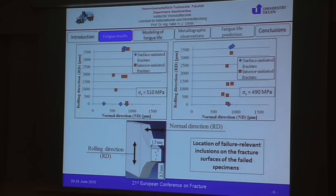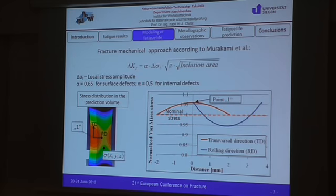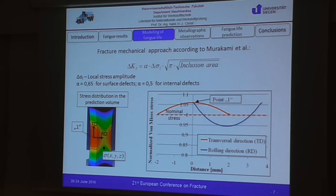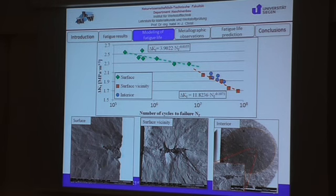In order to characterize the initial damage resulting from the presence of inclusions in the specimen interior, the fracture mechanical approach according to Murakami was used. In contrast to the conventional approach, we used not the nominal stress but the local stress resulting from our specimen geometry. Here you can see the correlation between the calculated stress intensity factor and the corresponding number of cycles to failure.